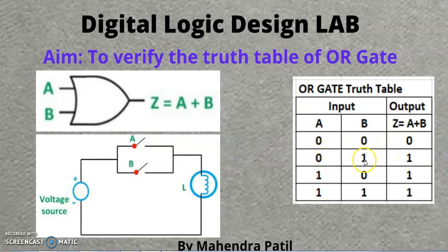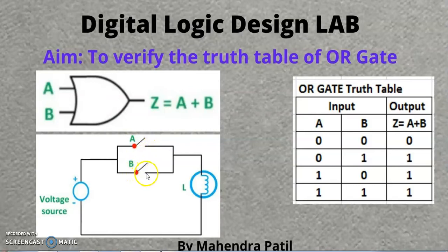We will apply 0 1 and check whether the lamp will glow or not. It means A input is 0 and B input is 1 — switch A is open whereas switch B is closed. The current will flow from switch B to the lamp and the lamp will glow. So the output is 1. For the combination 0 1, the output is 1.